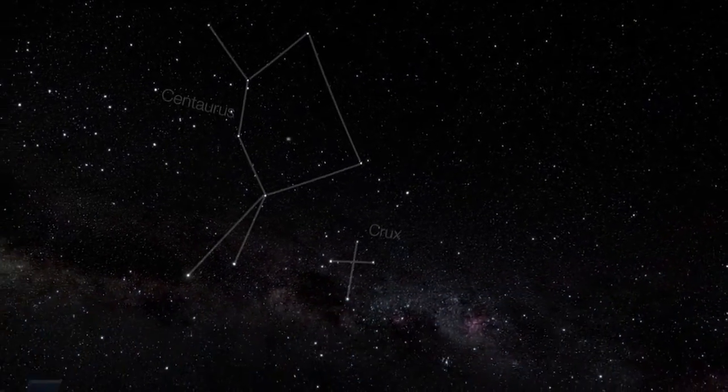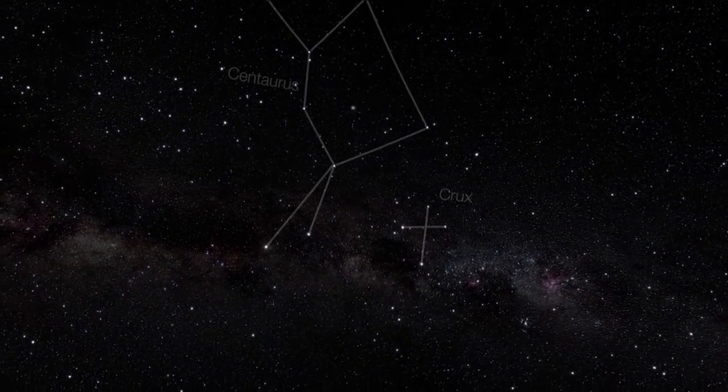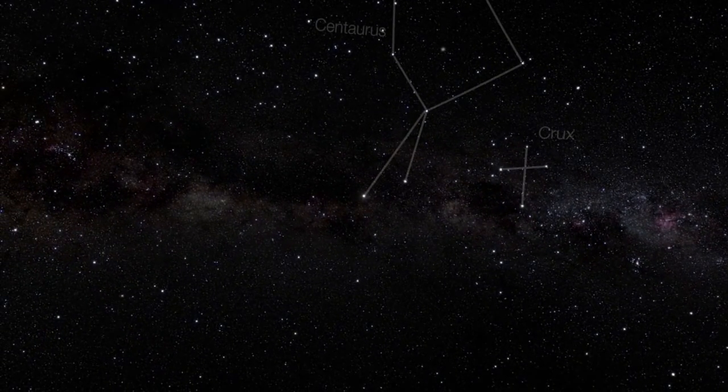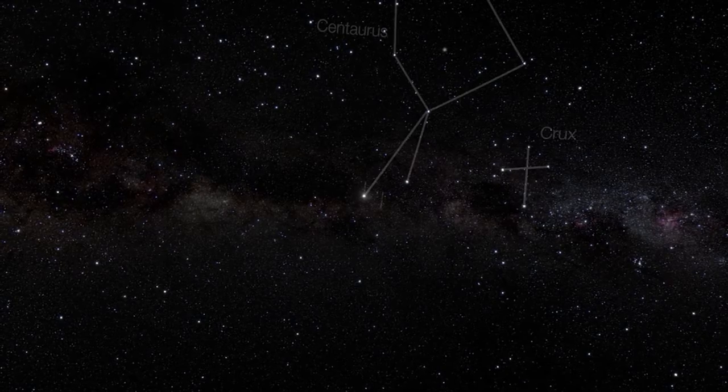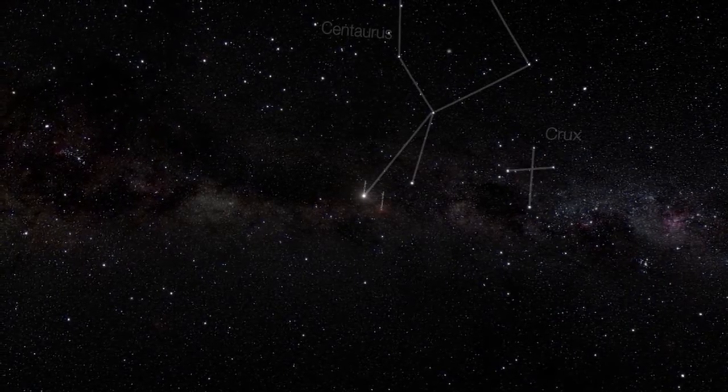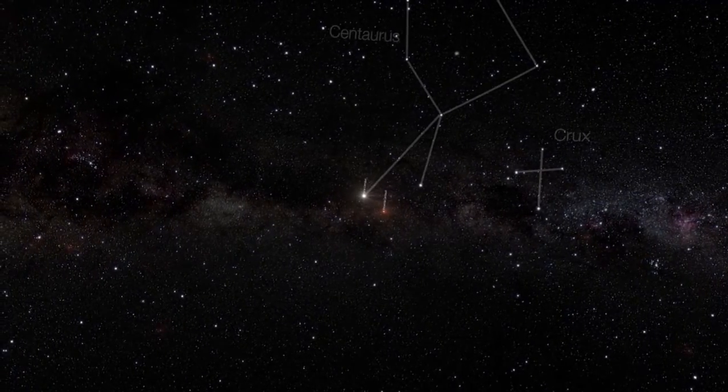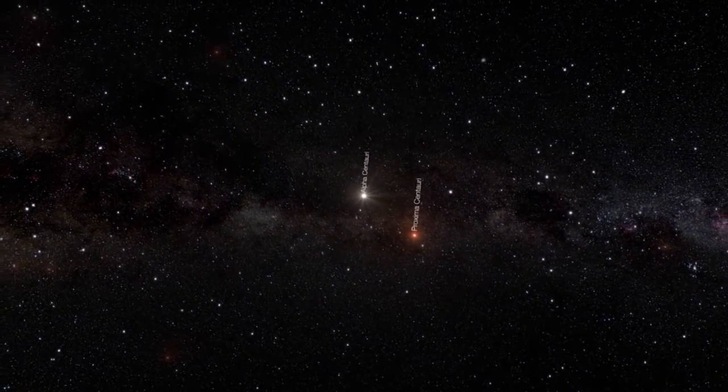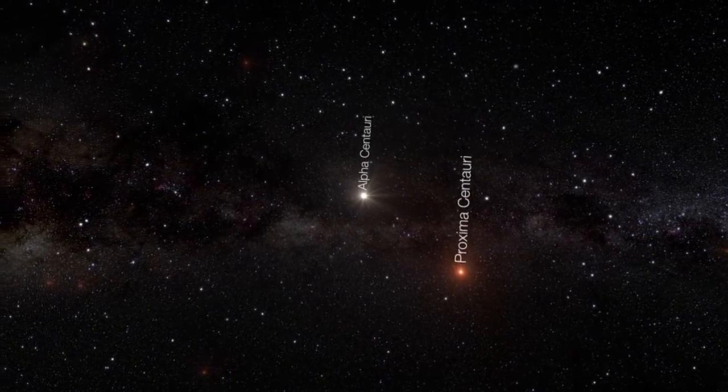4.2 light-years away, in the constellation of Centaurus, lies Proxima Centauri. This small, faint star is one of about 160 billion red dwarfs in the Milky Way. But this red dwarf is special. It's the closest known star to the Sun.